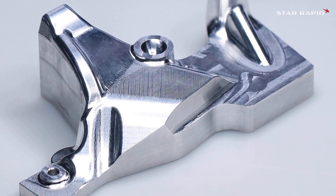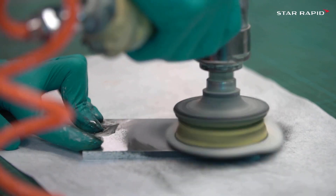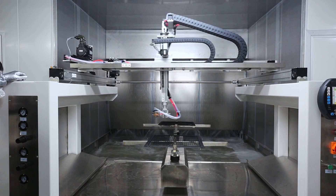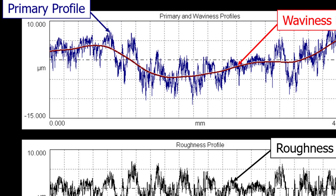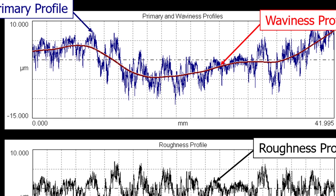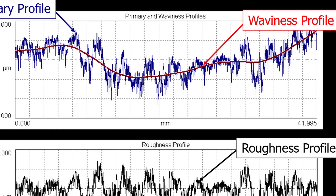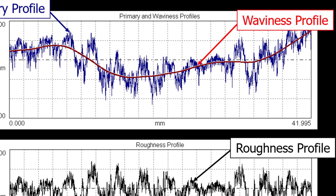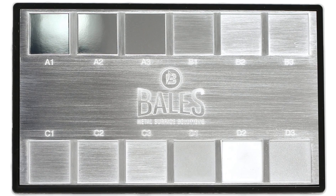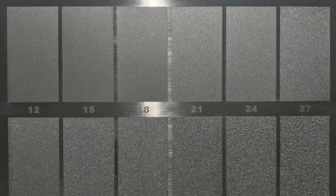Number five: specify the surface finish and flatness. Every manufacturing process leaves a characteristic finish on the part, although it may not be the one you want. The good news is that most finishes can be achieved through secondary finishing processes if you know how to specify them. There are several commonly available comparators routinely used to communicate numerical surface texture values. We recommend you reference SPI or Mold Tech gauges for plastic parts and VDI gauges for metal parts.